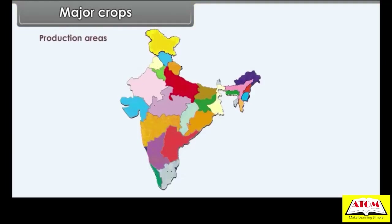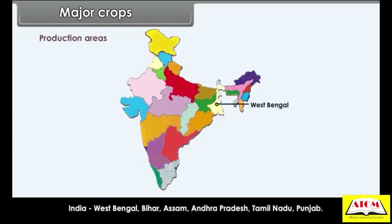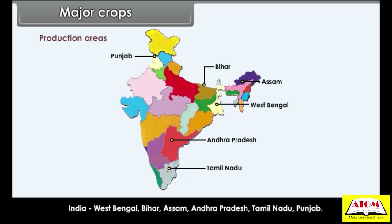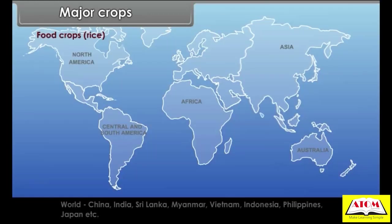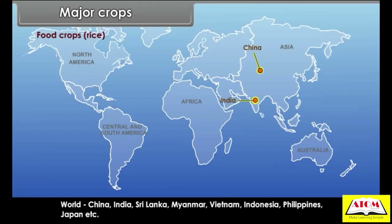Production areas — India: West Bengal, Bihar, Assam, Andhra Pradesh, Tamil Nadu, Punjab. World: China, India, Sri Lanka, Myanmar, Vietnam, Indonesia, Philippines, Japan, etc.